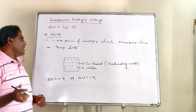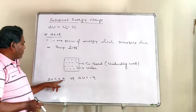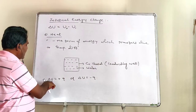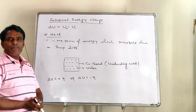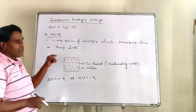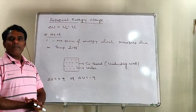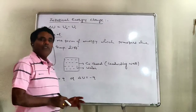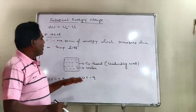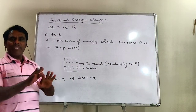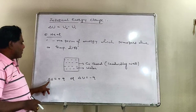Heat will pass from surroundings at higher temperature to the water at lower temperature. In this case, internal energy change will be equal to the amount of heat transferred to the water by the surroundings — that is, delta U will be equal to plus q. Heat will be transferred until the temperature of the water and the temperature of the surrounding reservoir become equal. Whatever amount of heat is absorbed by the water as a system will be equal to the internal energy change.